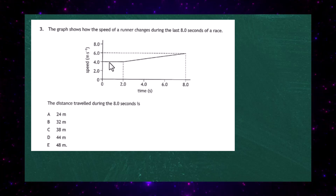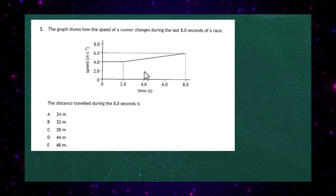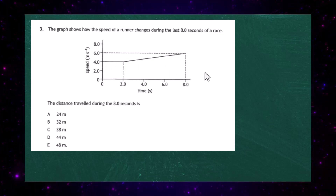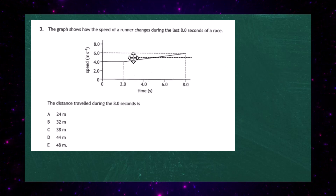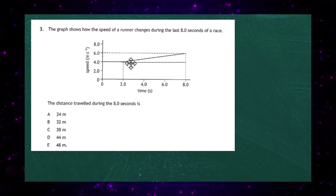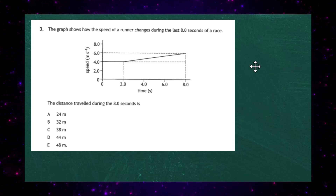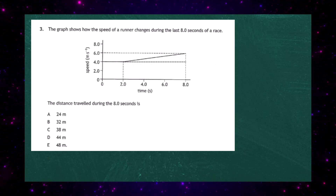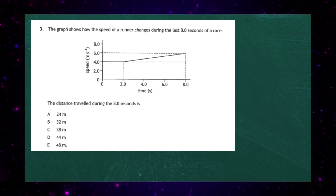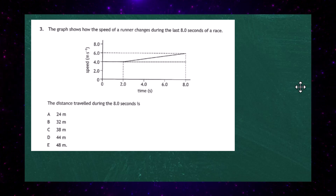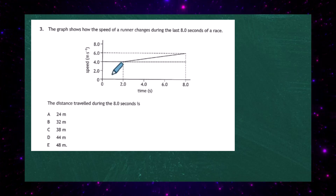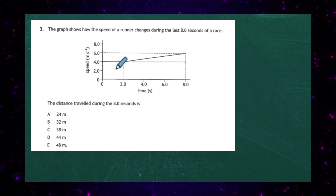For the first two seconds there's a rectangle we can calculate easily. The remaining section is more complex, so we section it off into a longer rectangle and a smaller triangle. Let's go ahead and work out all the areas.